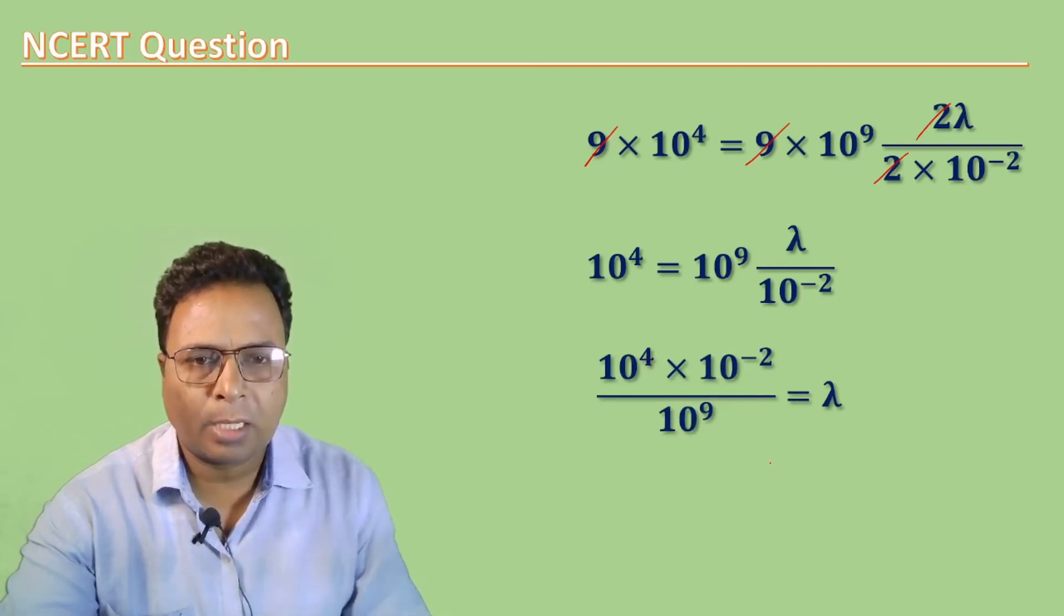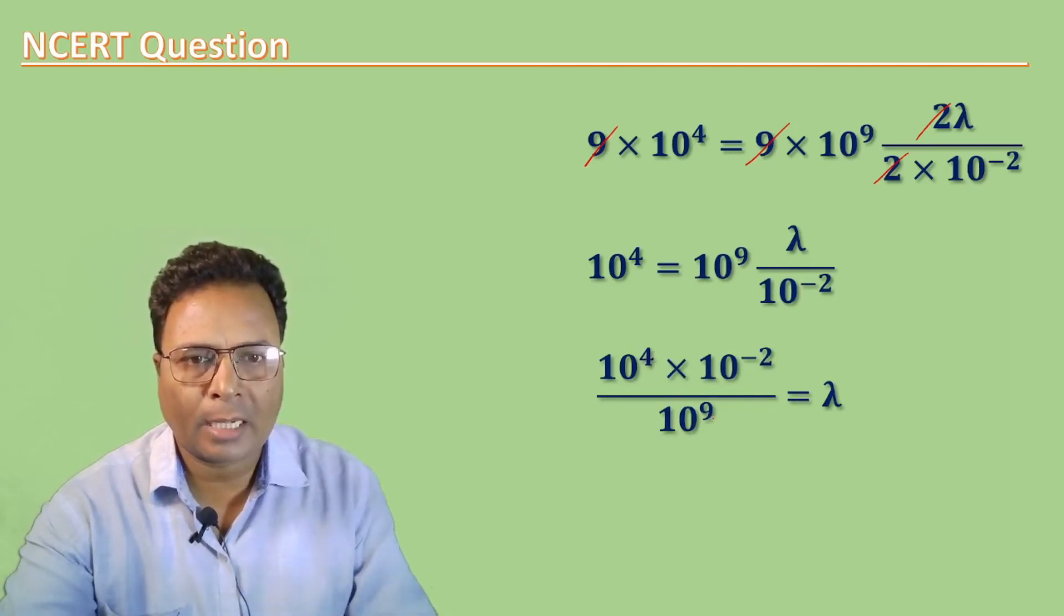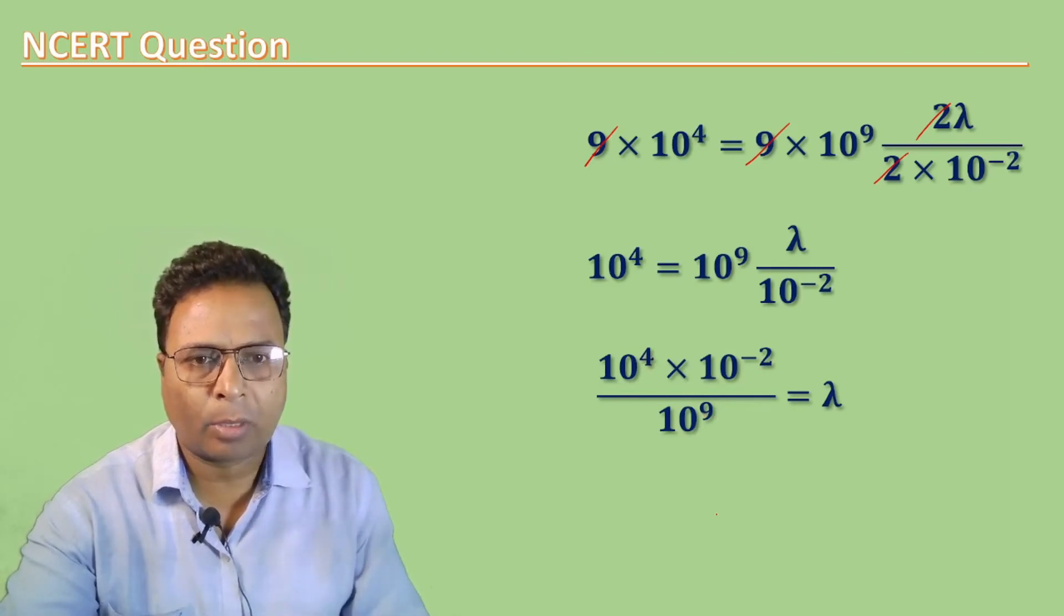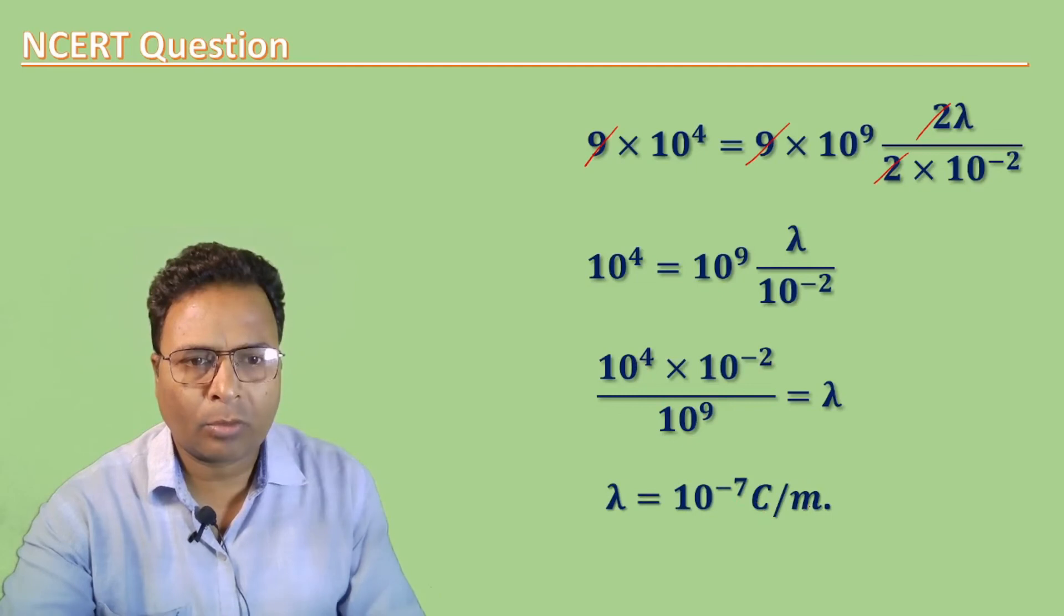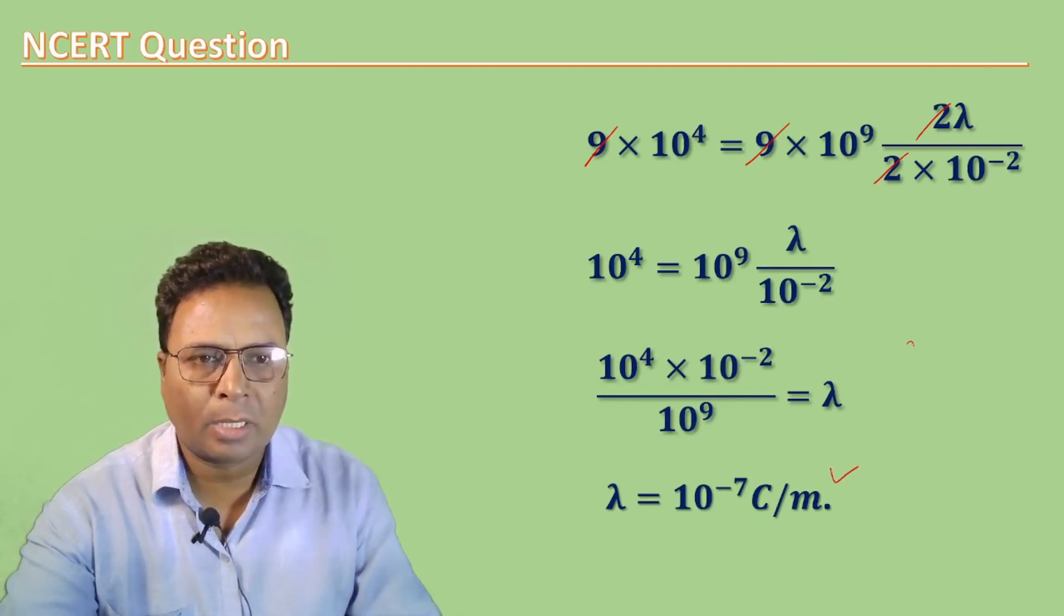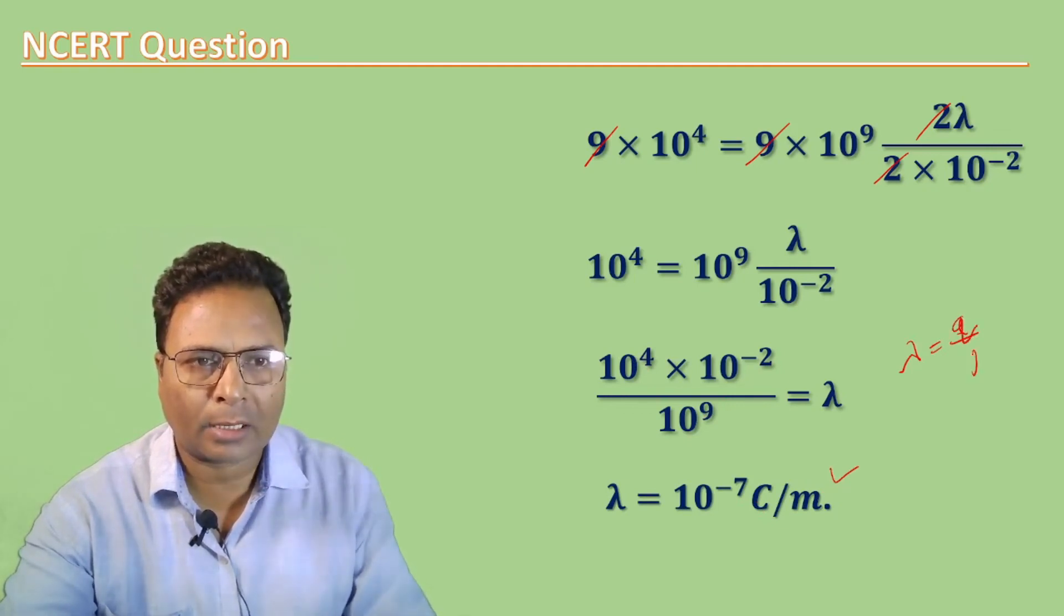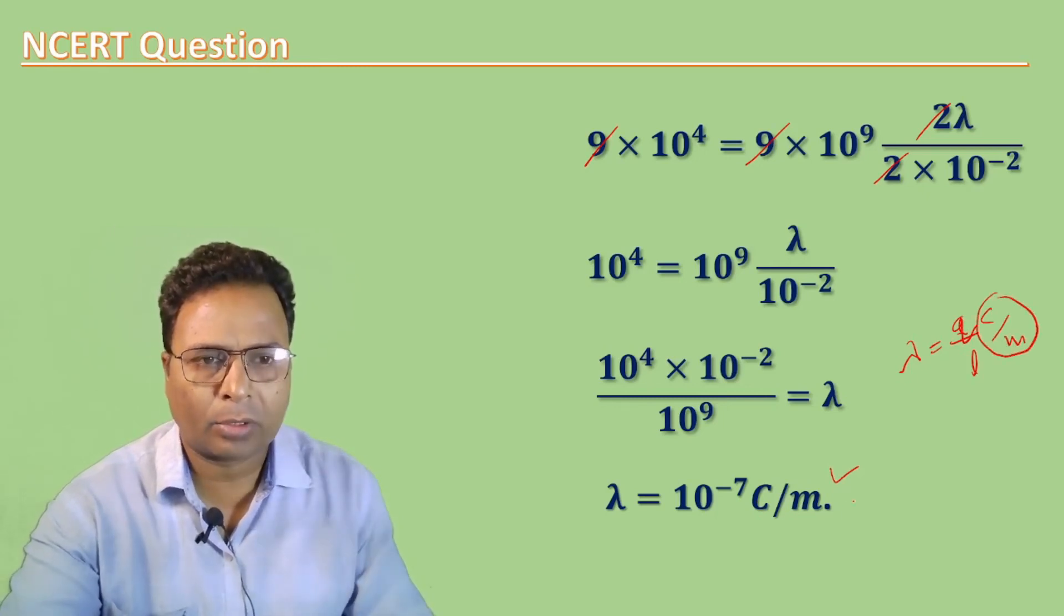This gives λ = 10⁻⁷ per meter. चुकि lambda होती है charge per unit length, तो charge की unit coulomb और length आपका meter, तो coulomb per meter इसकी unit हो जाएगी.